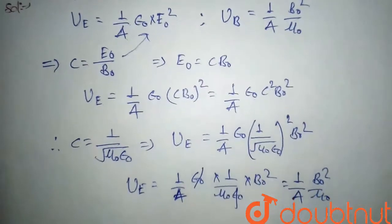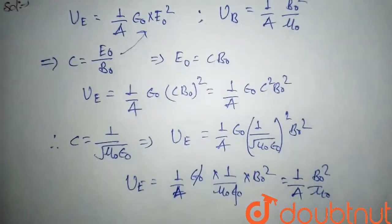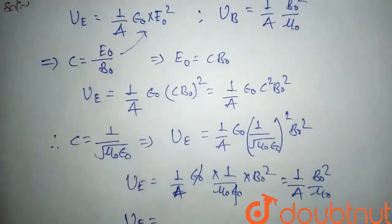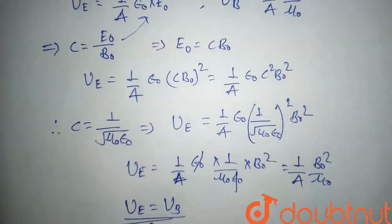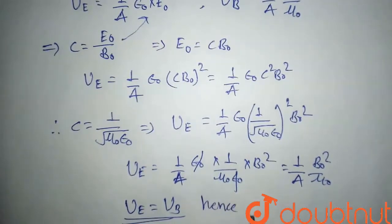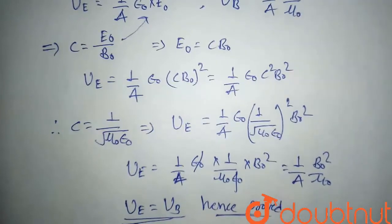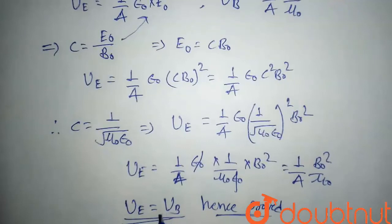So U_E equals U_B, which is what we had to prove. Hence proved: the average energy density of the electric field is equal to the average energy density of the magnetic field. Thank you.